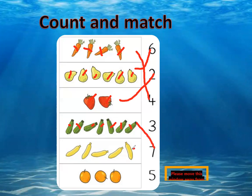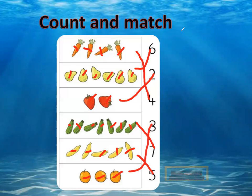Again: one, two, three, four, five — what is number five? Let's count the oranges: one, two, three oranges. Very good, that's number three.